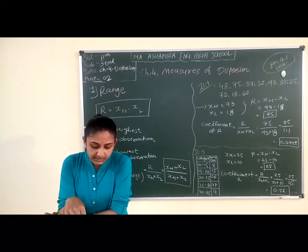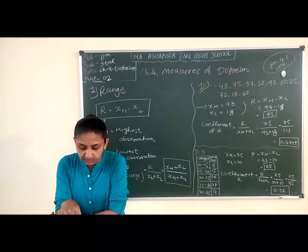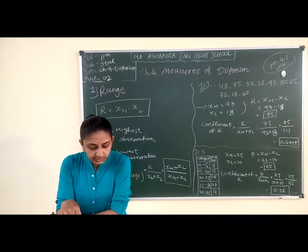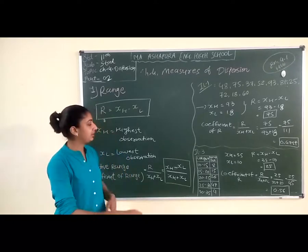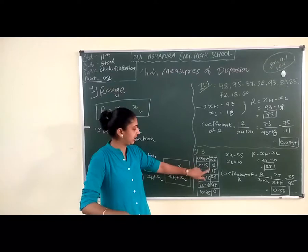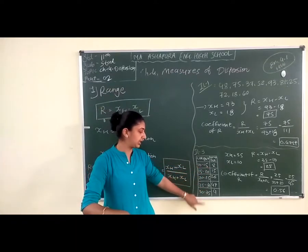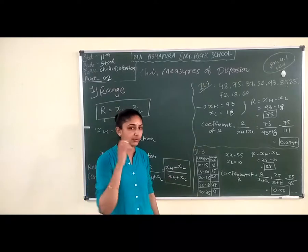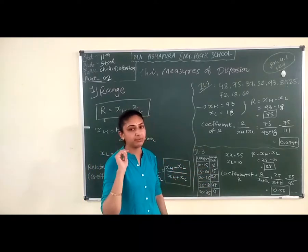Illustration 3 has class-wise information given. The items produced in a factory are packed into different boxes according to their weight. Using the following information, find the range and the relative range of weights. The weight classes are 10–15, 15–20, 20–25, 25–30, and 30–35, with number of boxes being 8, 15, 26, 47, and 4 respectively.